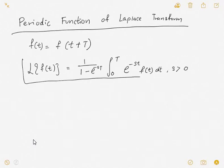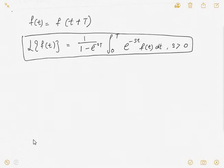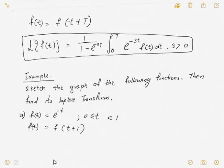So we have this formula. Now let's look at the example. The example asks us to sketch the graph of the following function, then find the Laplace transform of F(t). F(t) is given as e^(-t), where t is from 0 to less than 1.